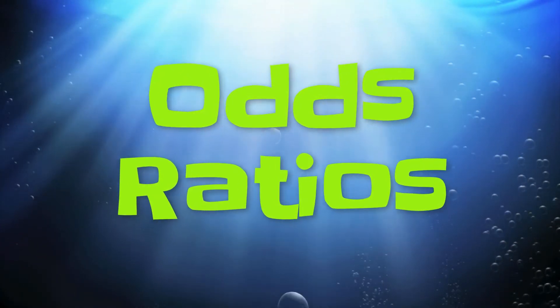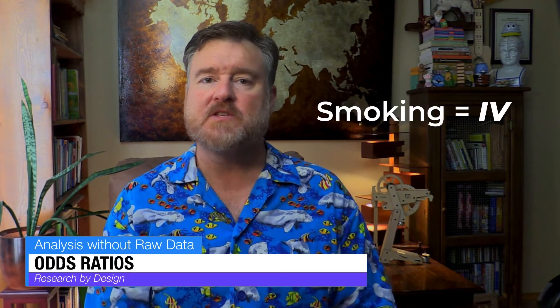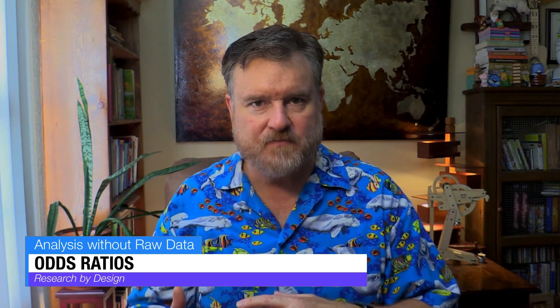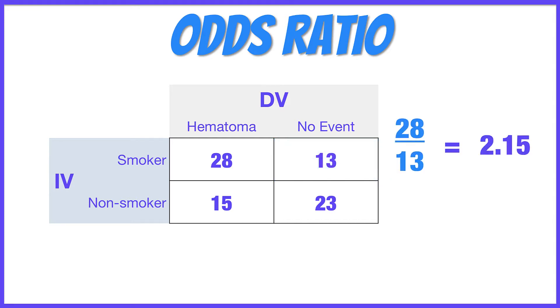Suggestion four: Odds ratios. This is a very simple formula that you can do with just counts. Consider the case where you want to understand the association between smoking — the independent variable — and hematomas — the dependent variable. Calculate the odds for each group: smokers versus non-smokers. For example, if there were 28 participants who were smokers and experienced a hematoma, and 13 participants who were smokers and did not experience a hematoma, then the odds of experiencing a hematoma versus not for smokers are 2.15.